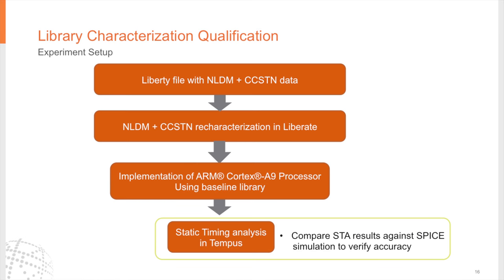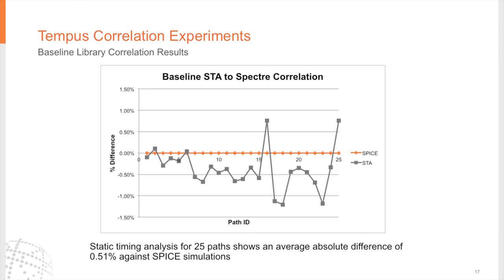There are two parts of qualification done in our flow. The first part is library characterization qualification using Liberate. We started the experiment with a reference library containing NLDM and CCS timing. We then did a re-characterization of the NLDM and CCS timing, and based on this library we did an implementation of an ARM Cortex-M processor and ran static timing analysis in Tempus to correlate STA results with SPICE simulations. We observed very close correlation, with an average difference of under one percent.